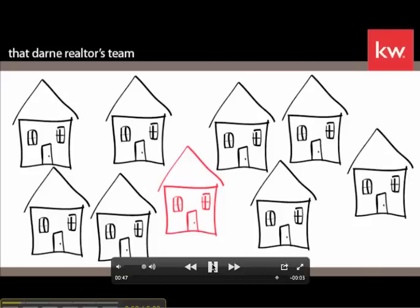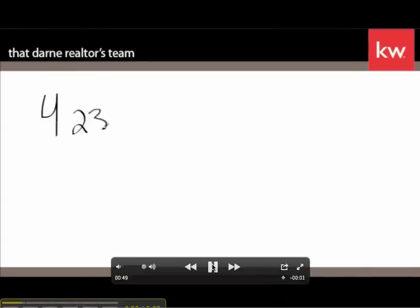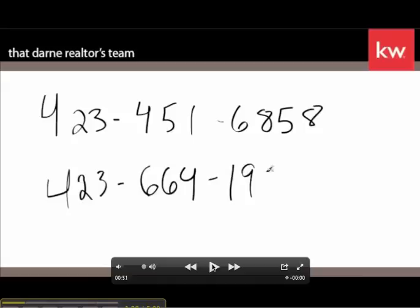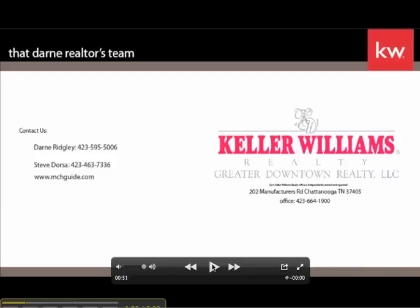If you'd like to know more about what we do to get your house sold, give us a call. We can be reached at 423-451-6858, or call our office, 423-664-1900. And you can always visit our website, MyChattanoogaHomeGuide.com or M-C-H-Guide.com.